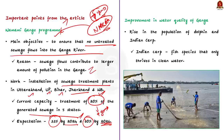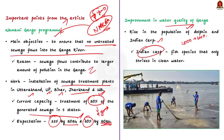The news article also mentions an improvement in water quality along the Ganga river. There was a rise in the population of dolphins and Indian carp. The dolphin population has risen from 2,000 to 4,000 and dolphins are now spotted on new stretches where they had not been found before. Indian carp is a fish species that only thrives in clean waters, so if these facts are correct, we can conclude that water quality in the Ganga has improved to some extent.